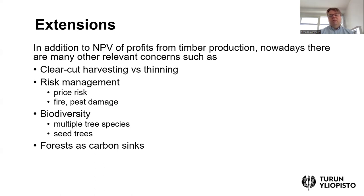If we think about more modern environmental issues, for example, it would be relevant to also think about the forest as a carbon sink. Perhaps also biodiversity — in the previous analysis, we didn't really take into account that there could be multiple tree species. It might also be important to leave some trees standing as so-called seed trees so they can help grow the next generation of forest. There has been a tendency in the past for clear-cut harvesting, where the entire forest plot is harvested at the same time. Nowadays, thinning is also increasingly used.